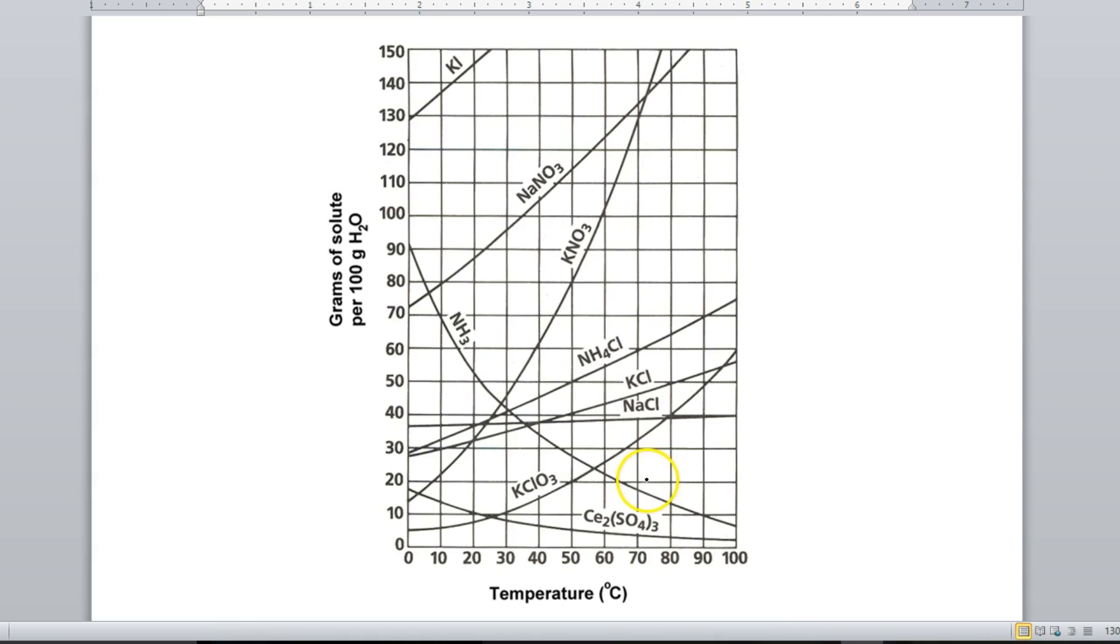Anything beyond that really is just being able to read a graph. Here's your x-axis, there's your y-axis, find your data point, move on. The only new thing about this is that the line itself is saturated, above the line is super saturated, below the line is unsaturated.